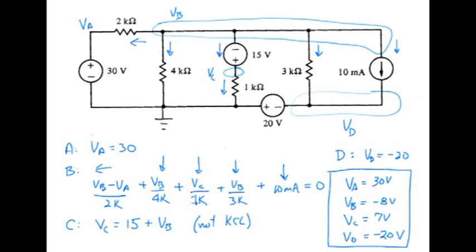So coming back to our circuit then, we have the final results. VA is 30 volts, VB minus 8 volts, VC equals 7 volts, V sub D equals 7 volts.